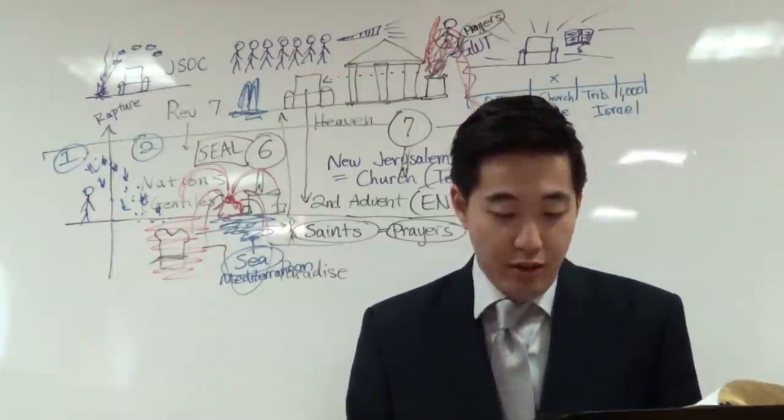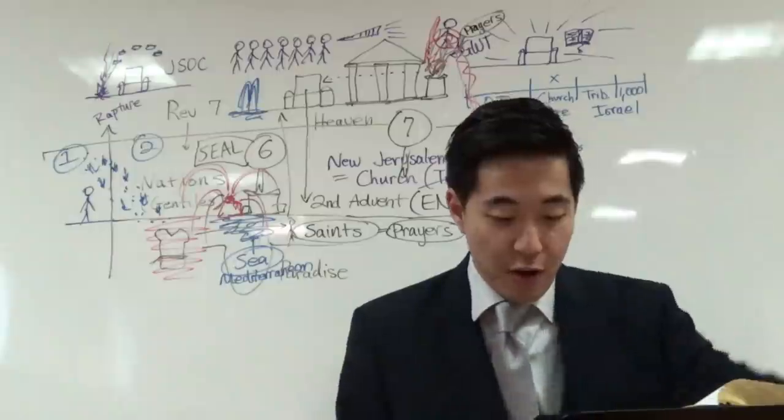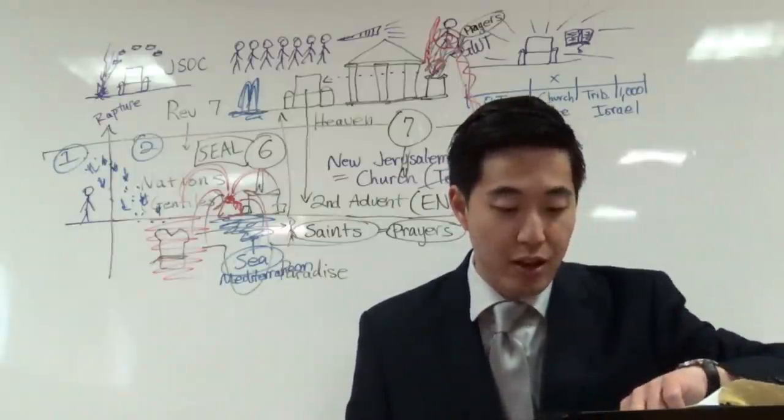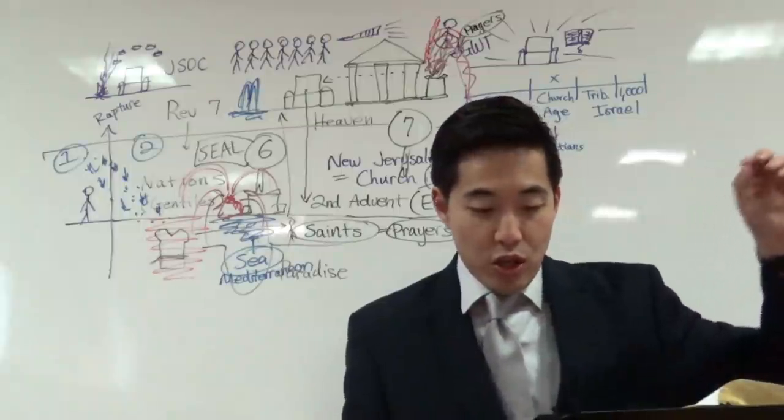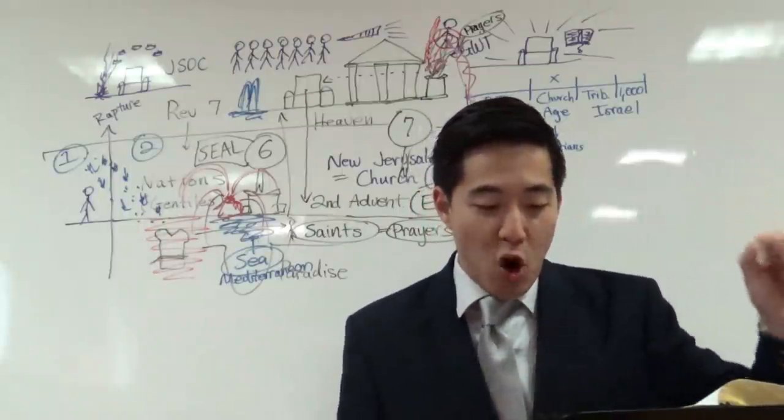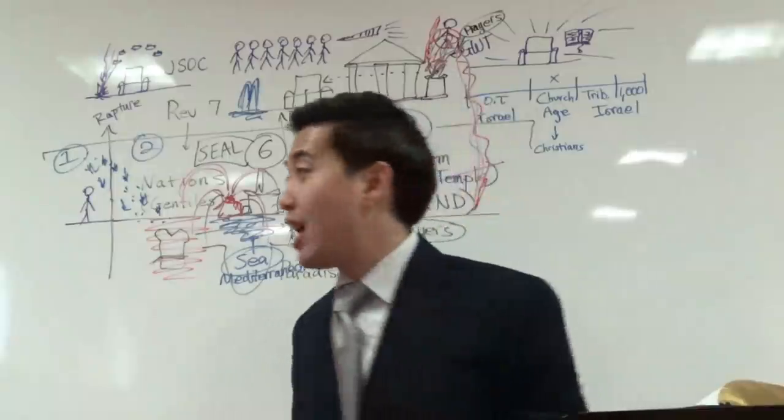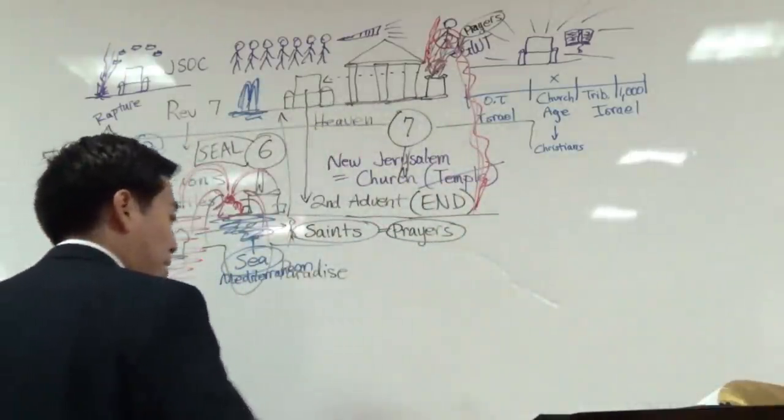Let's look at verse 10. And the third angel sounded, and there fell a great star from heaven. Now, look at this. This looks like a meteor. So, a star comes from out of heaven, burning as it were, a lamp. So, that looks like a meteor going off.